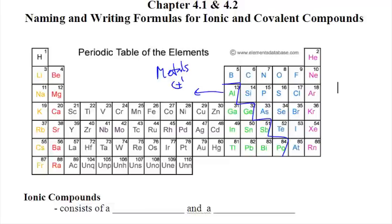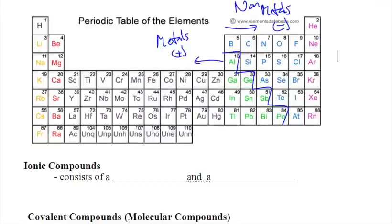And they have a positive charge. And to the right of the staircase, these are your non-metals. And they have a negative charge. When you make an ionic compound, ionic compounds consist of a metal and a non-metal. The metal is always written first, again it's positive. And the non-metal is written second, and again it's negative.